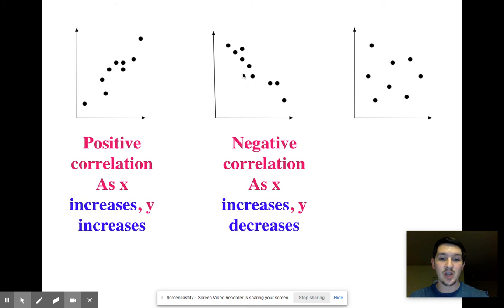This next one is a negative correlation. As your x decreases, or increases, your y decreases, which means we're going to get that negative correlation going down to the bottom right-hand side of your scatterplot.